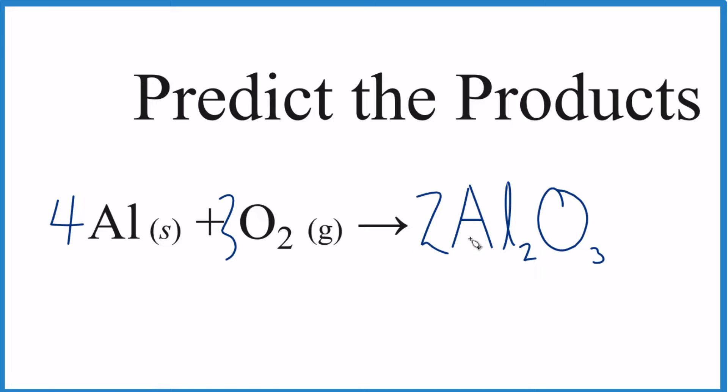That's it! We predicted the products, recognized we had two elements likely forming a combination reaction, then balanced the ionic charges since we have an ionic compound. This is Dr. B predicting the products of aluminum plus oxygen gas - we get aluminum oxide. Thanks for watching.